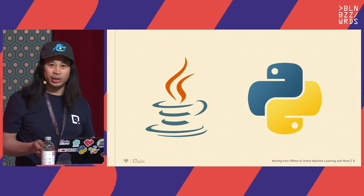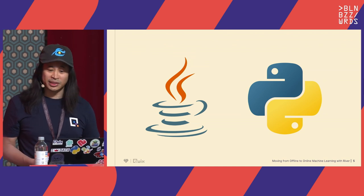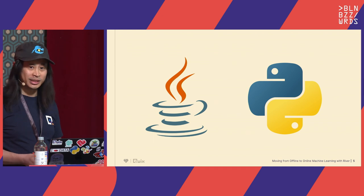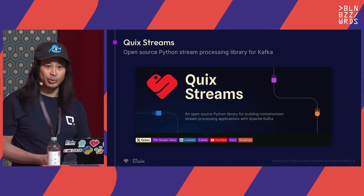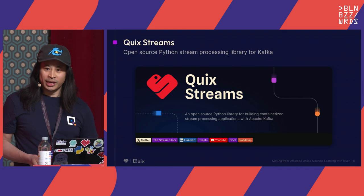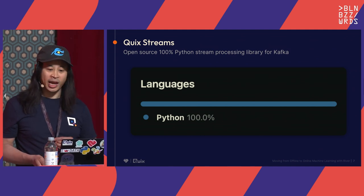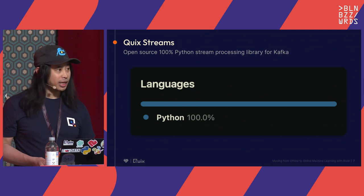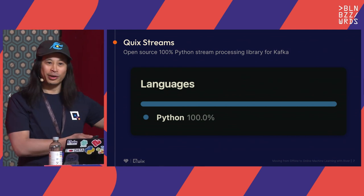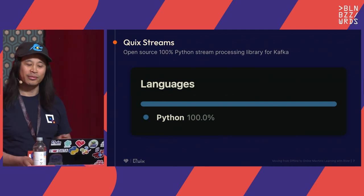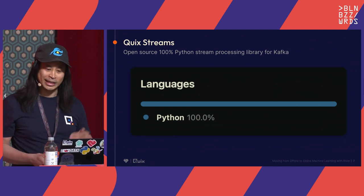Python makes sense because a lot of the data world — especially data science — has battle-tested libraries in the Python landscape. That's where Quix Streams was born. It's an open source library developed for developers who don't come from a Java background but need to work with real-time data. We made the conscious decision to make it 100% pure Python, not wrapped around other languages, which means you get the benefits of line-by-line debugging. You iterate your way to the final product through debugging, which is great for beginners and newcomers to stream processing.